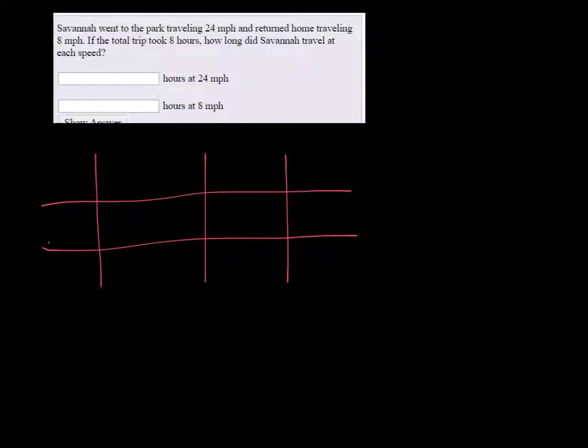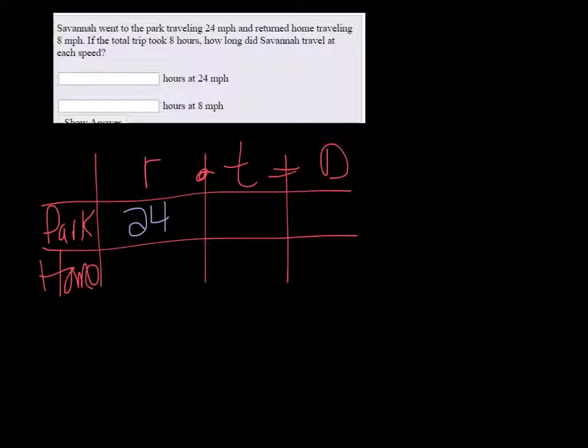So let's make our distance chart. She went to the park and then back home. Rate times time equals distance. Her rate going to the park was 24 miles per hour and coming back was 8 miles per hour.